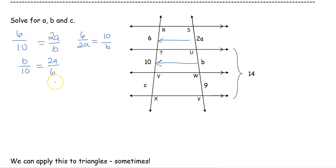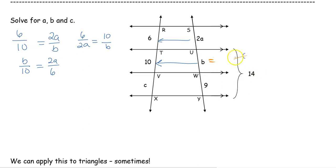As I look at all those proportions, I do have a problem — I have two variables. I don't want two variables, so we've got to do some other work before we can start solving. I notice that I can solve for b right away. I'm given that this whole section is 14, so what does b have to be which added to 9 gives us 14? That's going to be 5, because 5 plus 9 is 14, or you could do 14 minus 9. Either way, b equals 5.